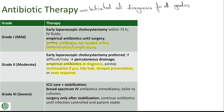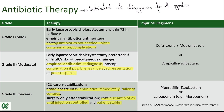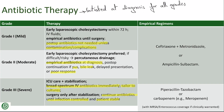In Grade 3 (severe) cases, broad-spectrum IV antibiotics are essential and initiated immediately as part of ICU stabilization. Therapy is tailored based on culture results and continued until infection is controlled and the patient is clinically stable. Empirical regimens for mild to moderate cases include ceftriaxone and metronidazole, or ampicillin-sulbactam. Severe or sepsis cases require stronger antibiotics such as piperacillin-tazobactam or a carbapenem, with MRSA and Enterococcus coverage if clinically warranted. Antibiotic choice should be tailored based on culture results once available.